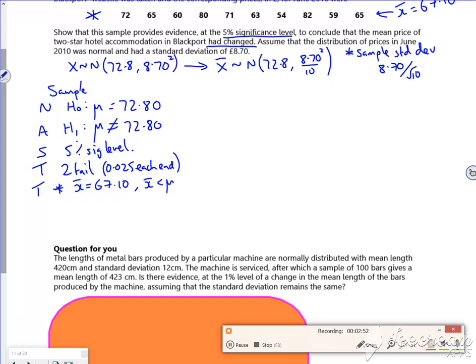Because if it's less than, I'll expect it to be less than, so I'm going to look at the probability that X̄ is less than £67.10. In my calculator, my lower is minus 10,000, my upper is 67.1, sigma which is 8.7 over root 10, and μ is 72.8. If you do that in your calculator, you get roughly 0.0191.